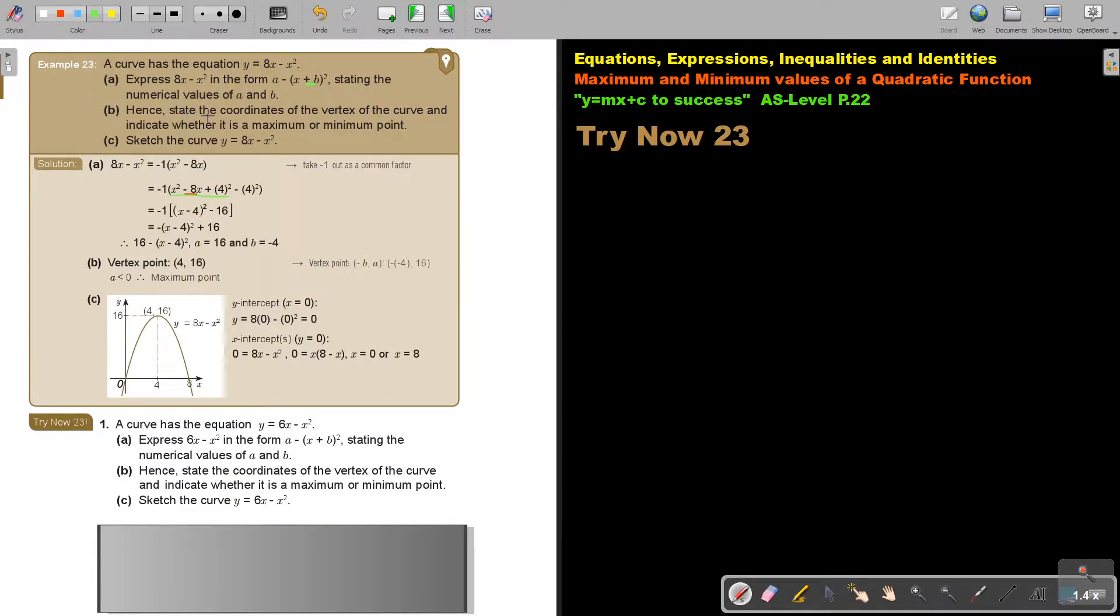Now let's take the coordinates of the vertex of the curve or the turning point and indicate whether it's a maximum or a minimum. You can already see from that, because it's negative X squared, it's going to have a maximum point. Maximum point because A is smaller than 0, that's correct, it's negative.